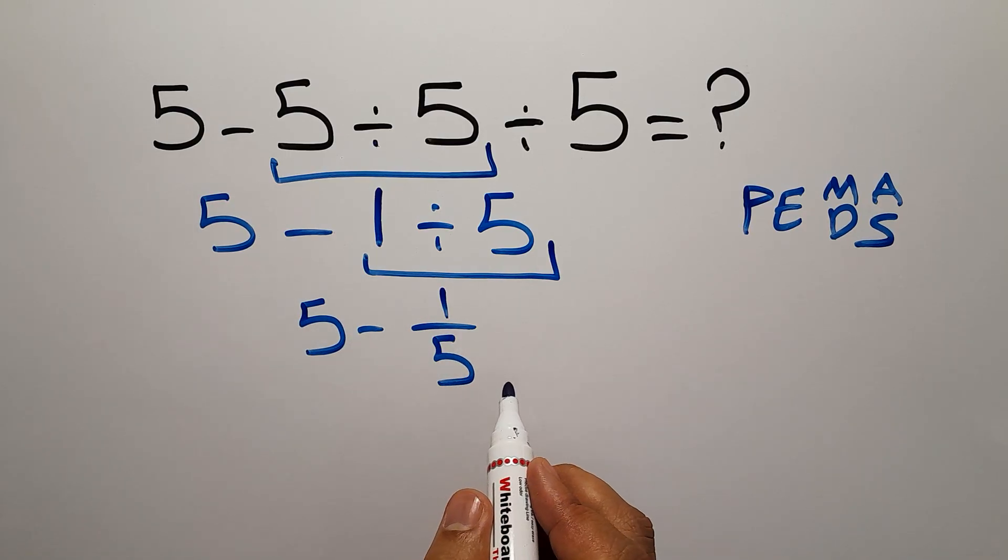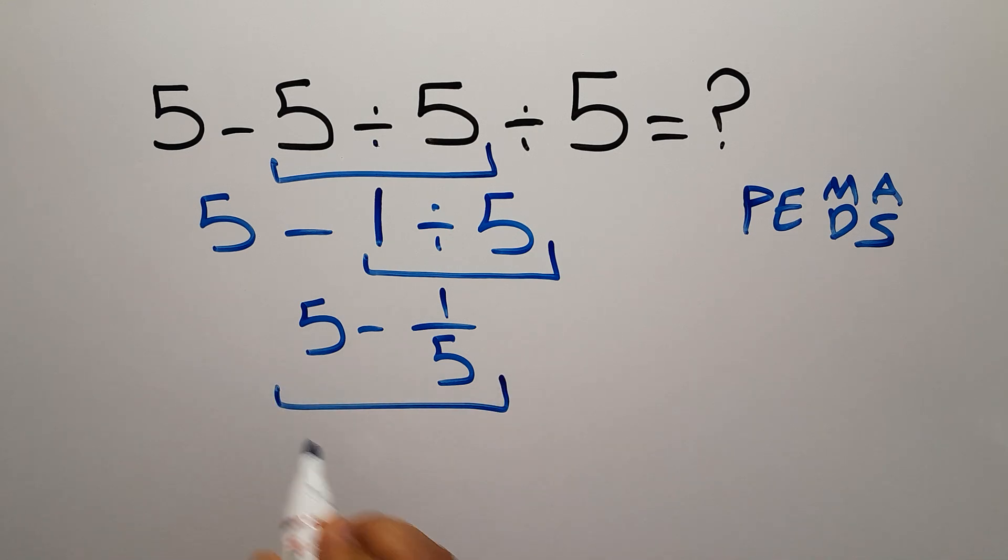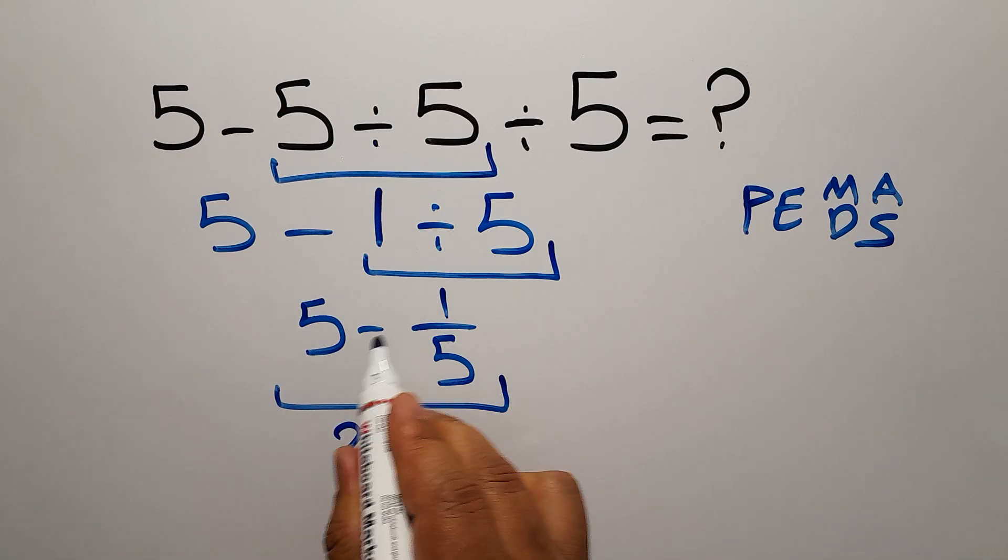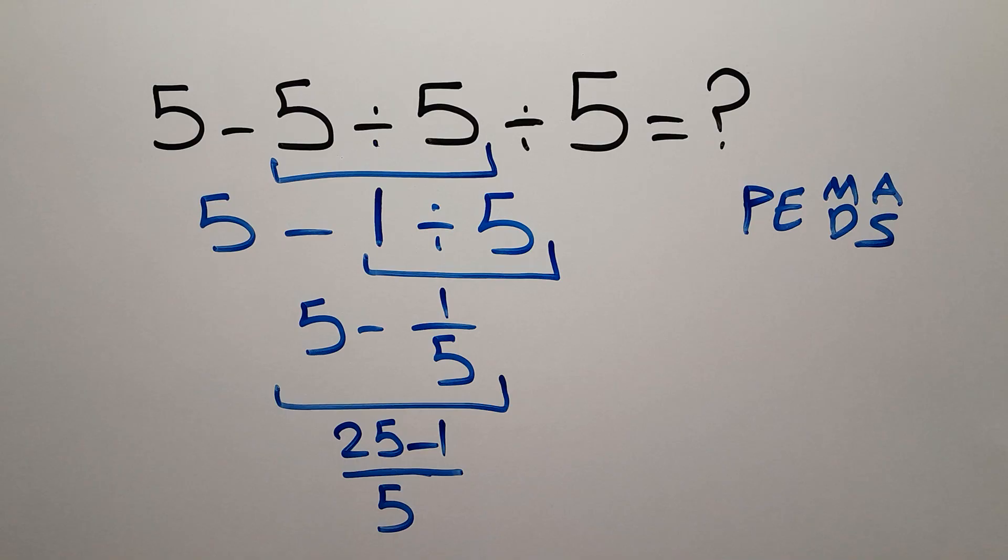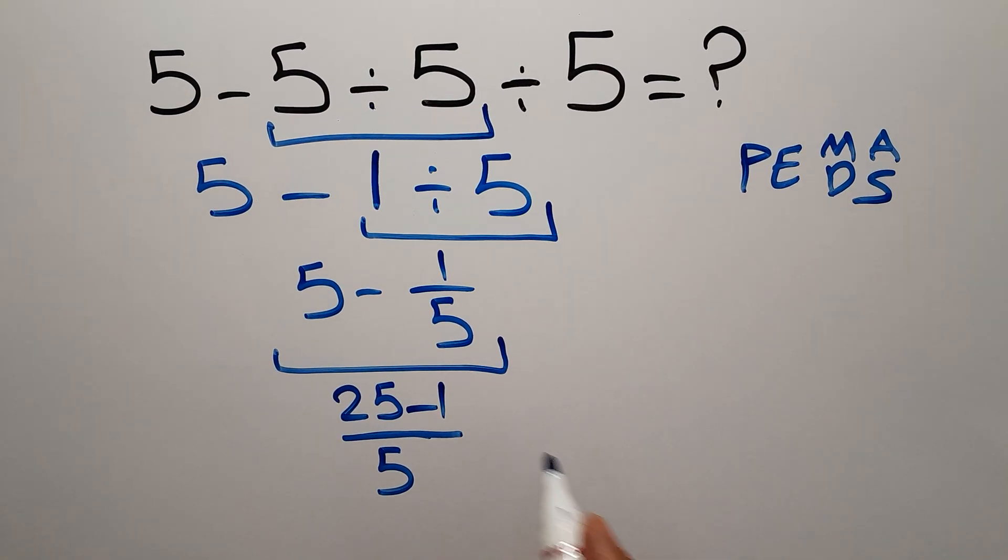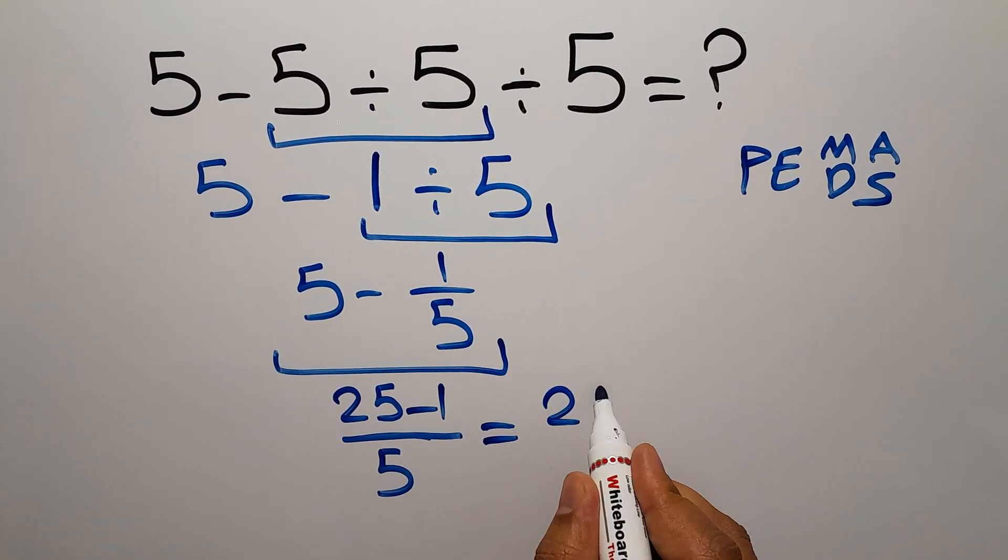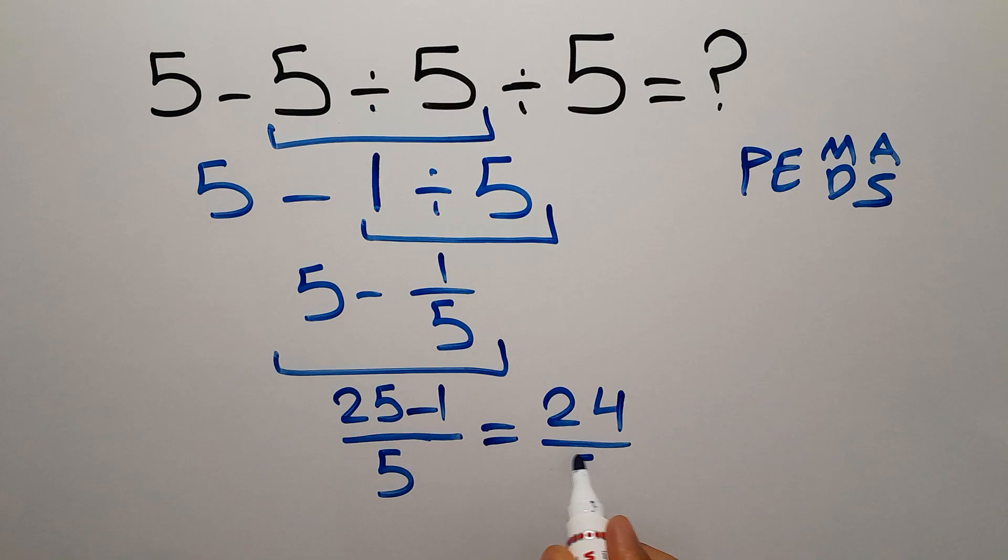Here, a common denominator is 5. 5 times 5 gives us 25. So 25 minus 1, which equals 24 over 5.